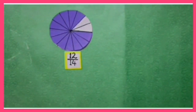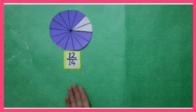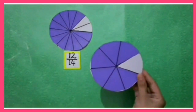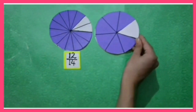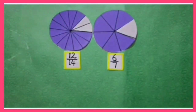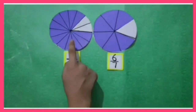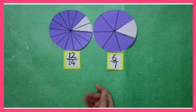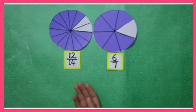Now we will see whether 12 upon 14 is in its lowest form or not. Here I have a circle which is divided into 7 equal parts, in which the fraction of the colored portion is 6 upon 7. This circle is representing the same colored portion as the first one.